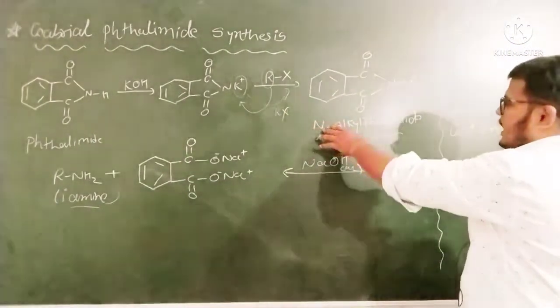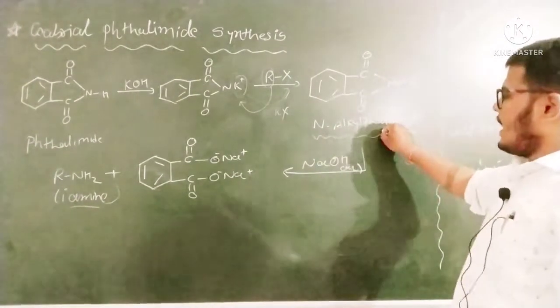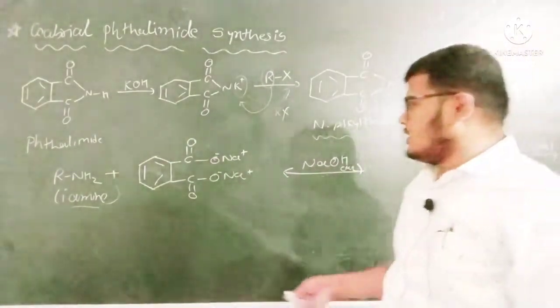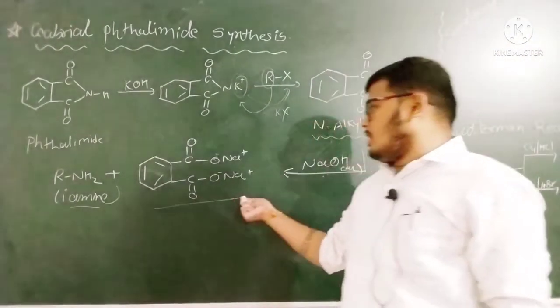So we can see here the N-alkyl phthalimide is here. Now further N-alkyl phthalimide is treated with sodium hydroxide, aqueous sodium hydroxide. It is converted into this compound.